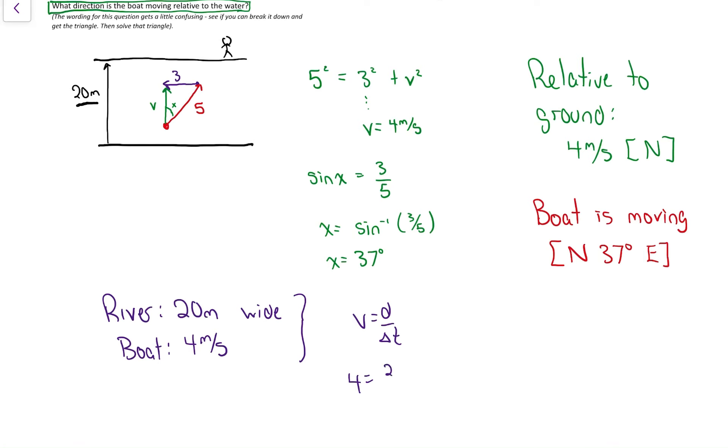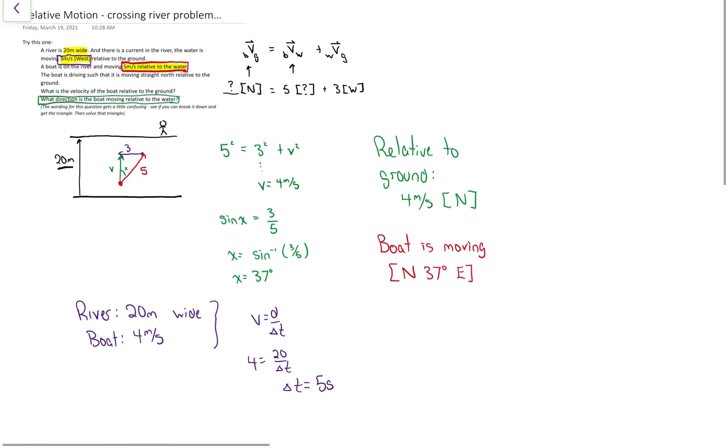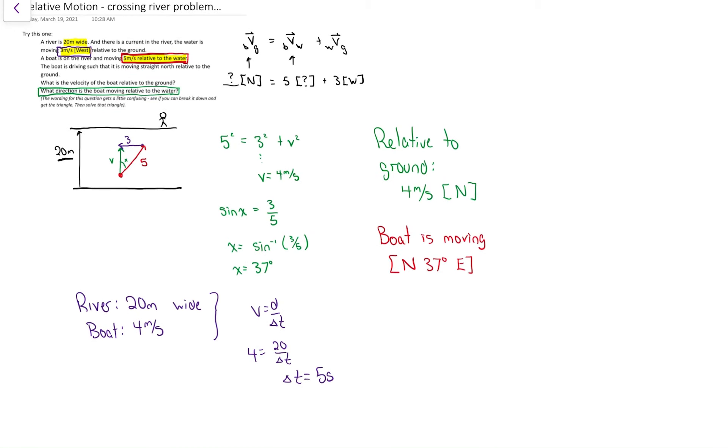So we got 4 equals 20 divided by I don't know. The I don't know would have to be 5. So I didn't ask it when I typed this question up, but if we wanted to go a step farther, we could figure out that it takes the boat five seconds to get across.